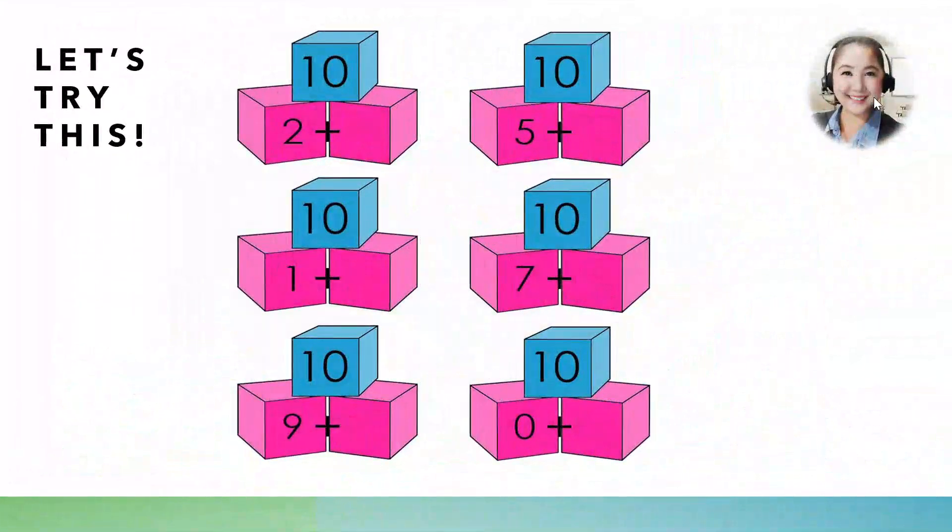Alright, now let's try this. What can you see? Yes, blocks! What colors? Blue blocks and pink blocks. Oh, what do you notice? Yes, number 10 is written on the blue block. In the pink blocks, there is a missing number, right? Now, help me find the other pair. Okay, let's start with 10 and 2.